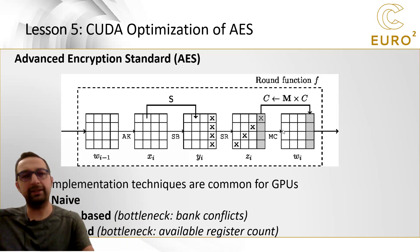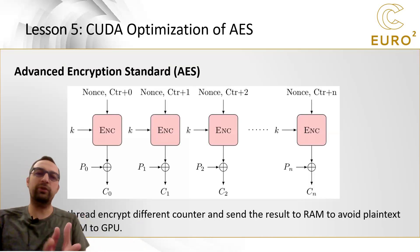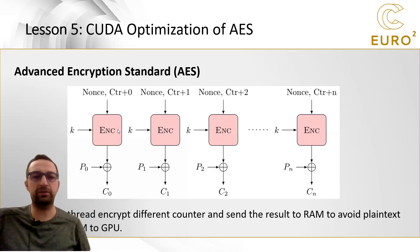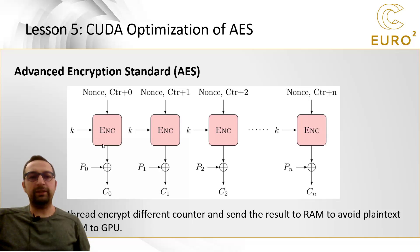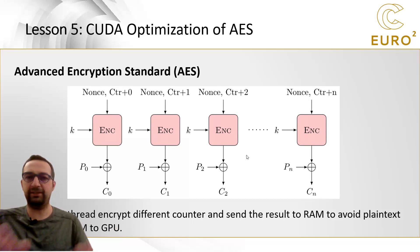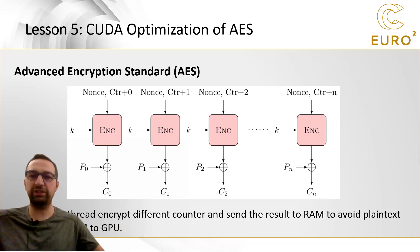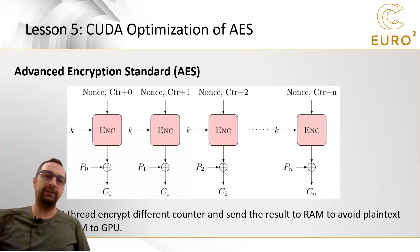Instead of providing parallelization within the algorithm itself, we should focus on the mode of operation. This is why we looked at counter mode. Instead of optimizing the algorithm across different threads, we implement our code so that each thread performs encryption for a different block. Since threads don't need to communicate with each other in this case, this gives us parallelizability. We divide a large plaintext into blocks and each thread performs at least one encryption on a block.